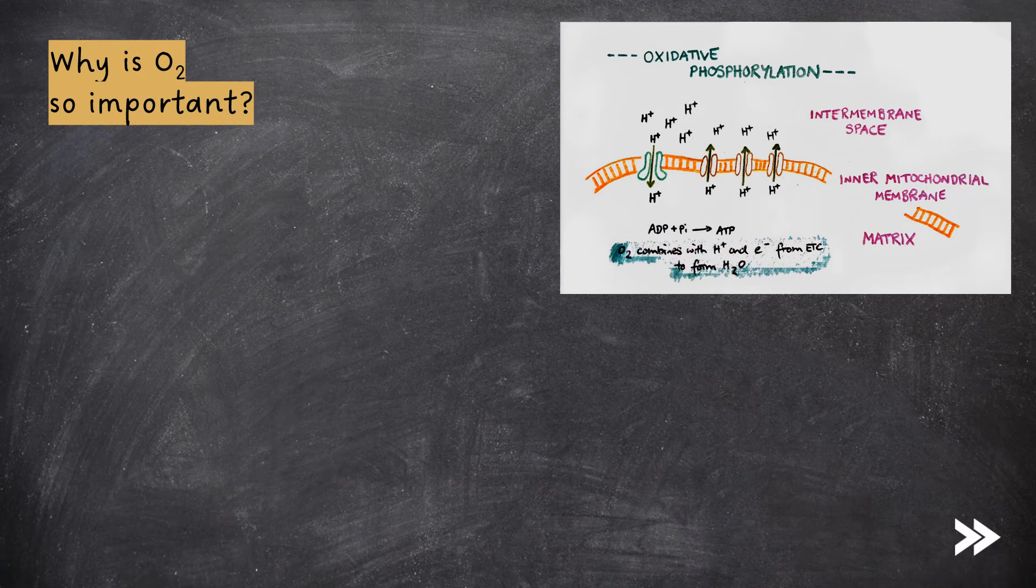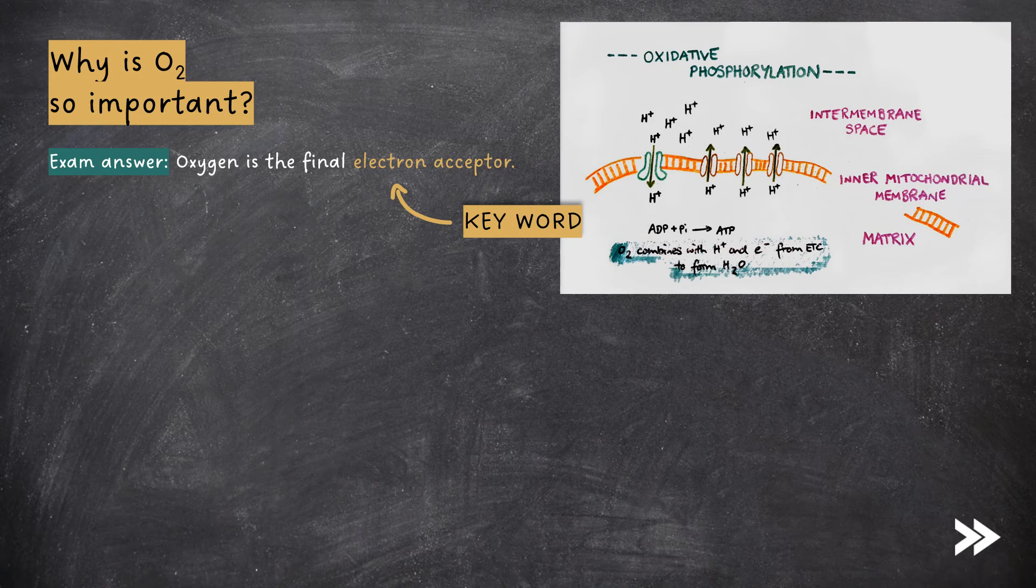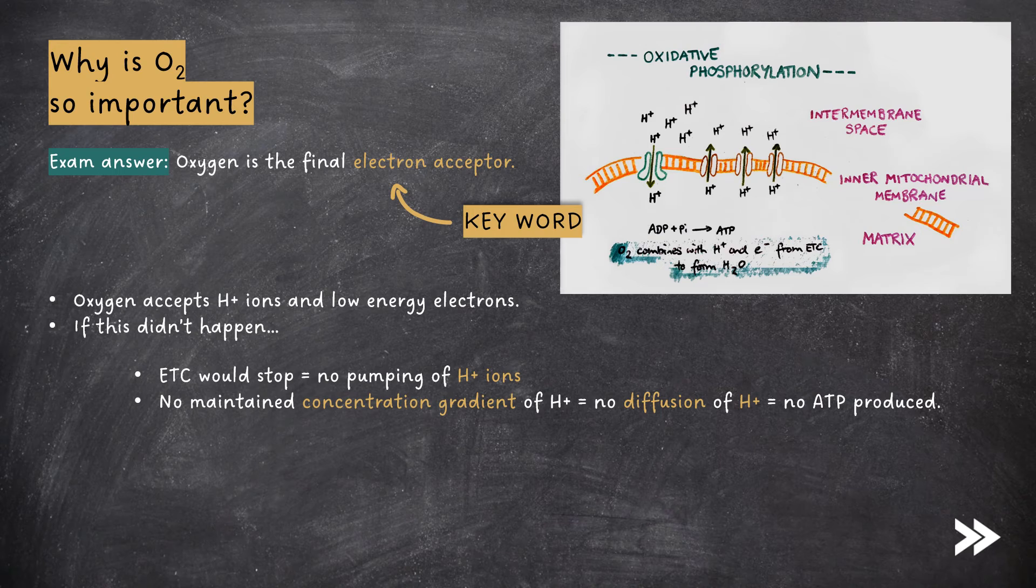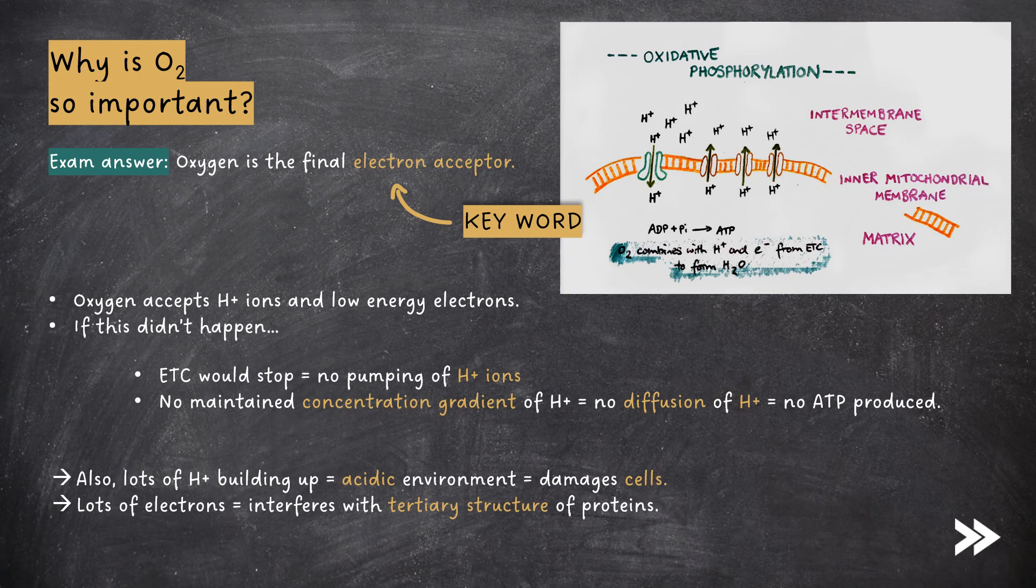So why is oxygen so important? In exams, this is a fairly standard answer which you have to learn. You should state that oxygen is the final electron acceptor. This is your key word, electron acceptor. Oxygen accepts hydrogen ions and low energy electrons to form water. If this didn't happen, the electron transport chain would stop, meaning that there would be no pumping of hydrogen ions. That would also mean no maintained concentration gradient of hydrogen ions, resulting in no diffusion of hydrogen ions through ATP synthase, meaning that no ATP would be produced. Also, lots of hydrogen ions building up would create an acidic environment, damaging cells. Lots of electrons being present also would interfere with the tertiary structure of proteins.